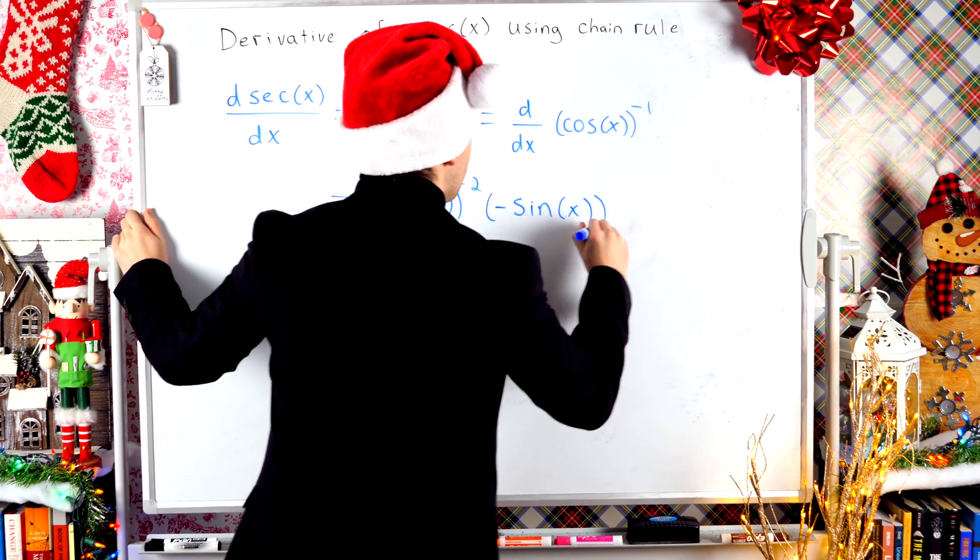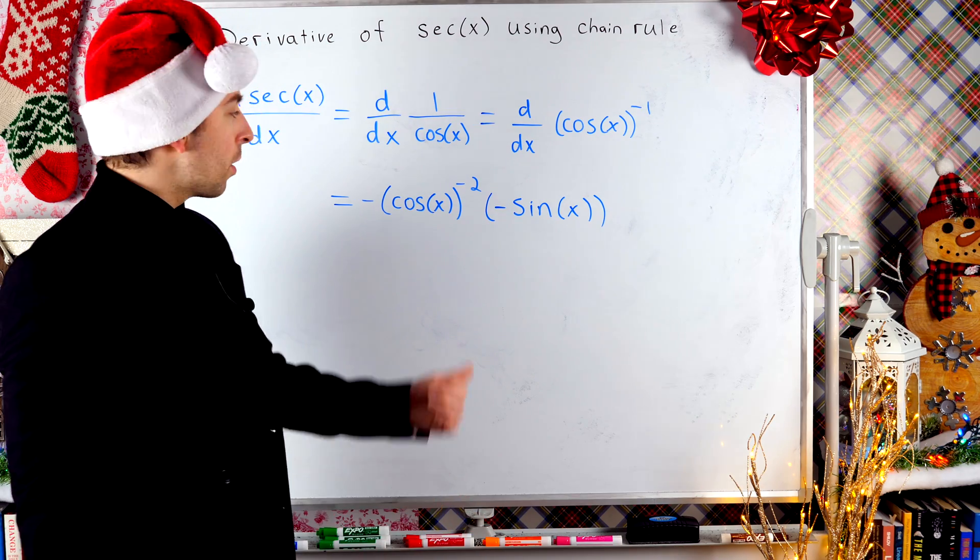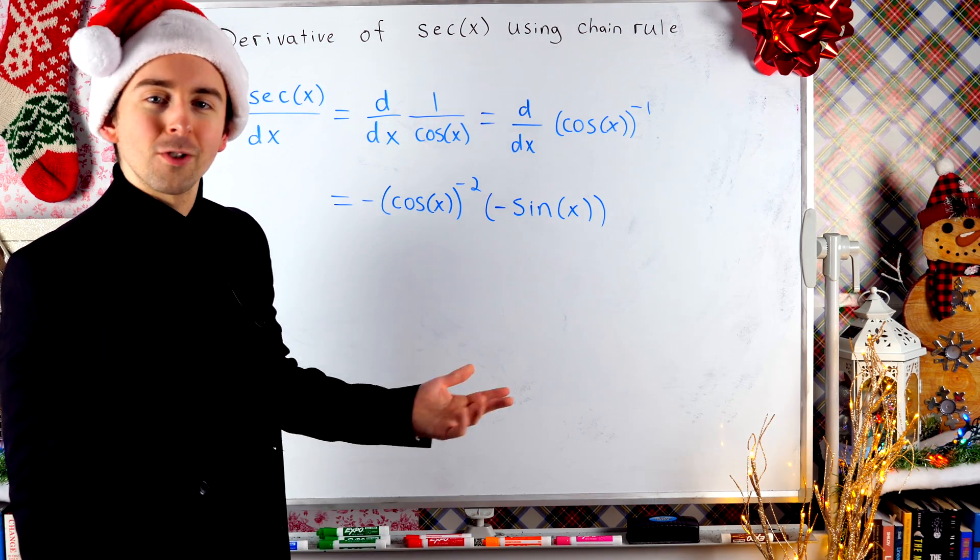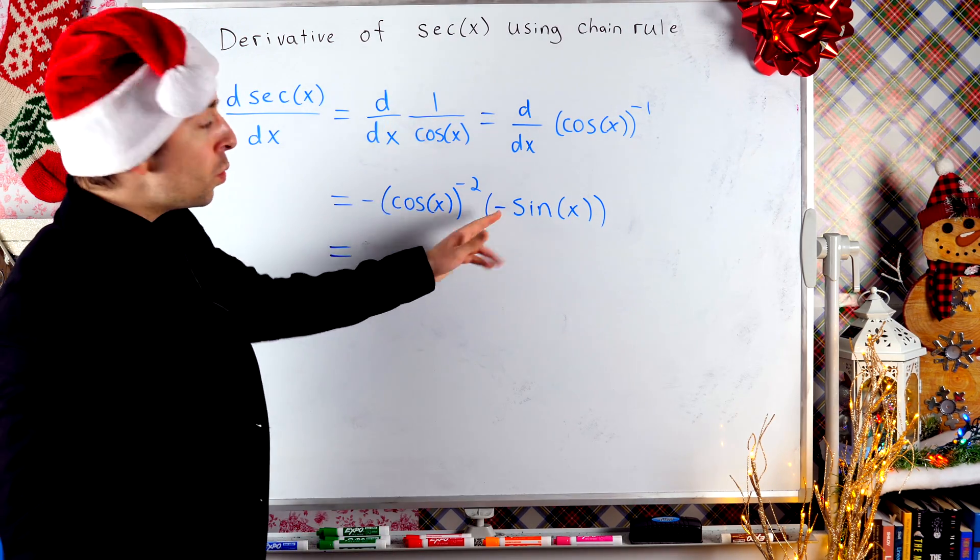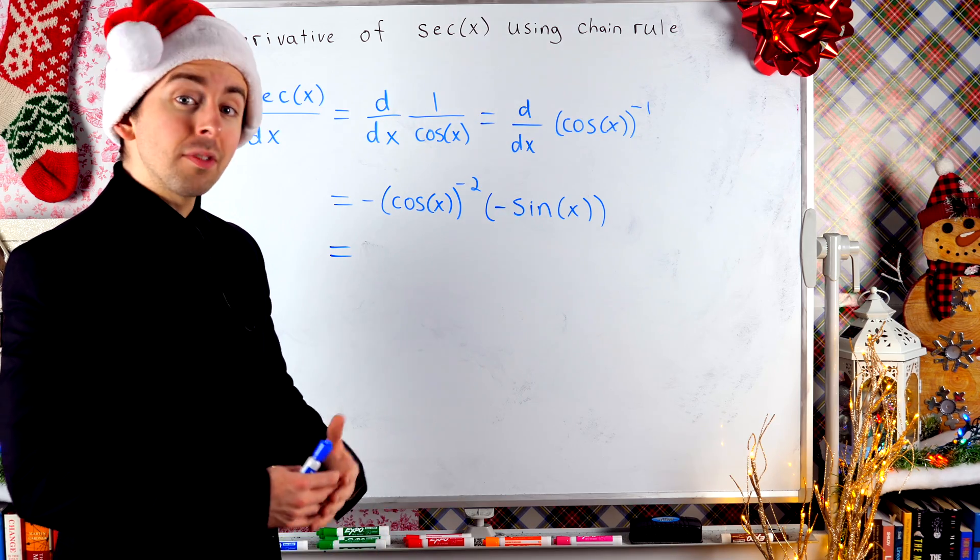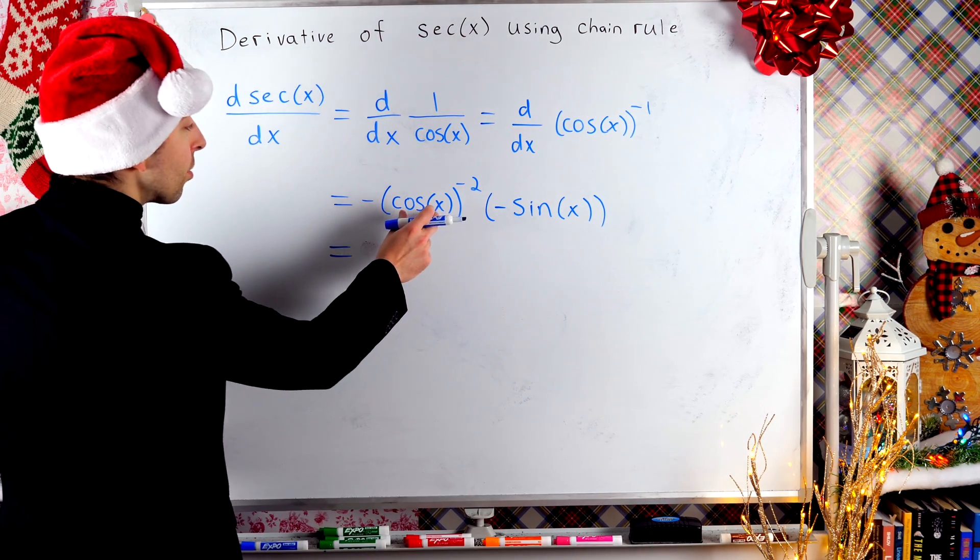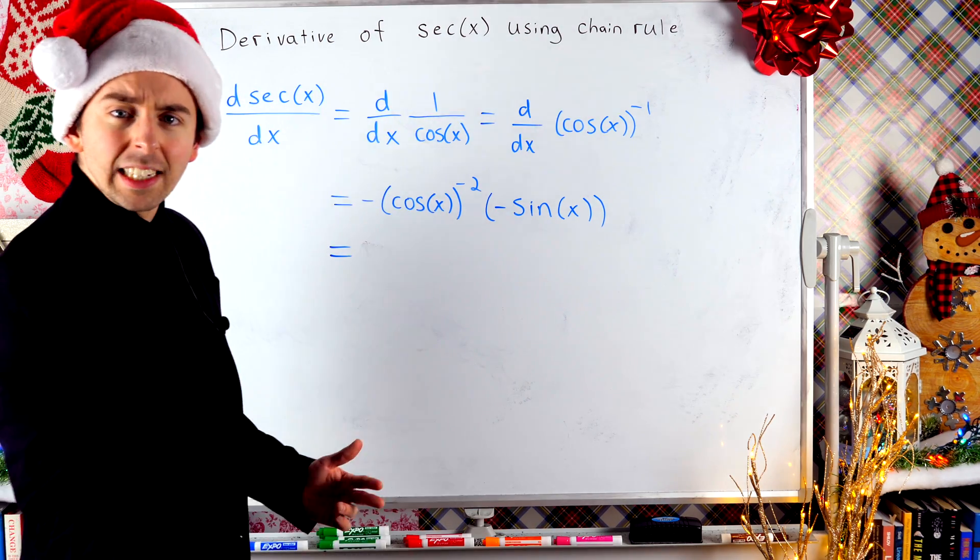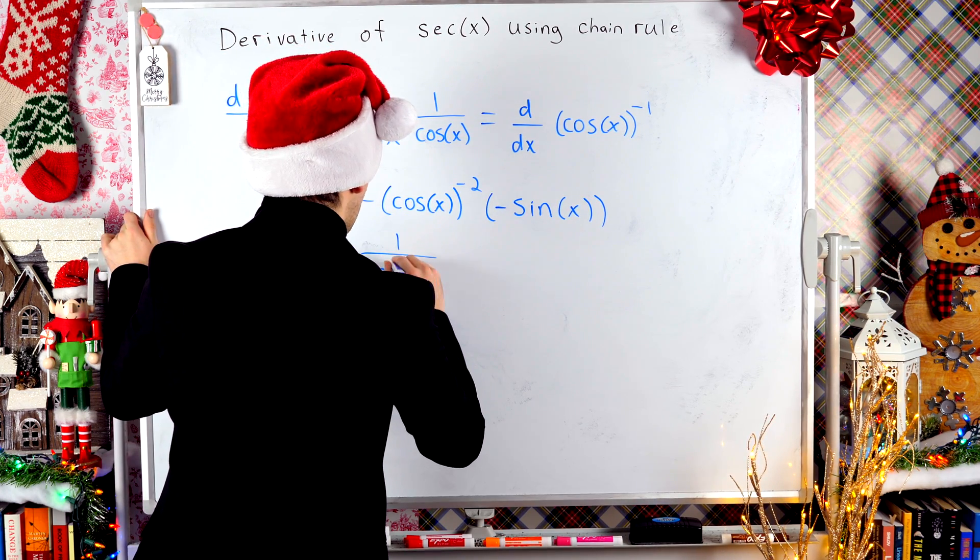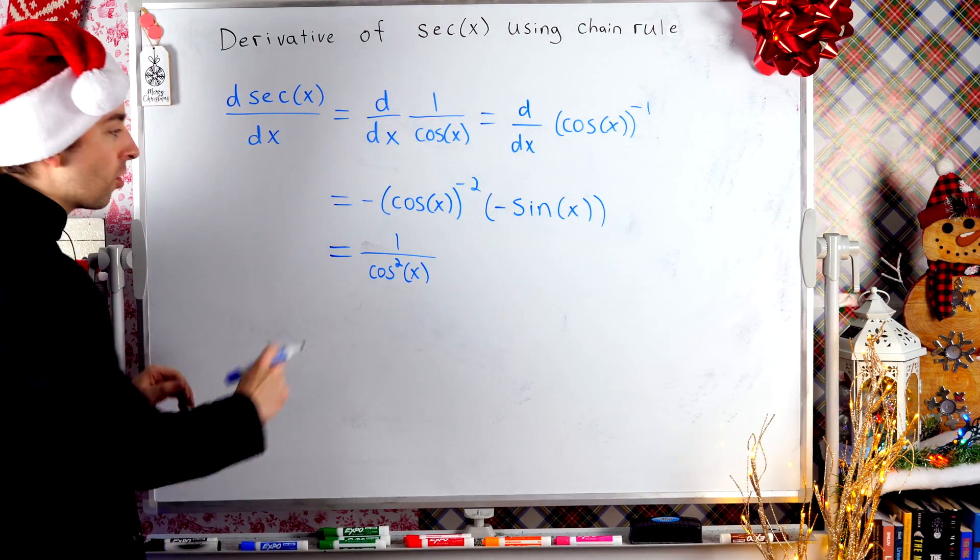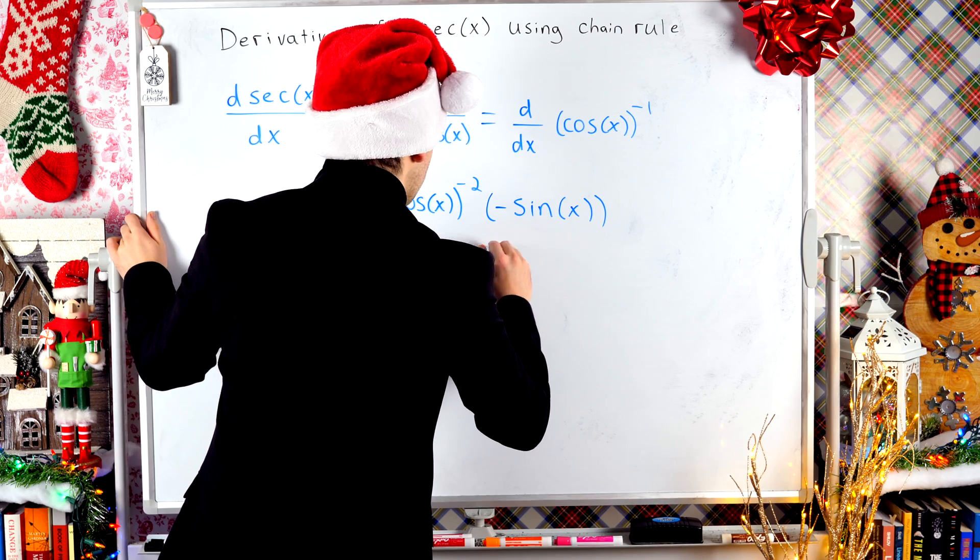All that remains is a little bit of simplification. Why don't you try and do some simplification yourself before watching me go through it? All right, let's finish it off. We've got two negative factors. So those negatives are going to cancel out. We don't have to worry about any negative signs anymore. Now what is cosine to the power of negative two? Well, that would be one over cosine squared. And I'm going to write cosine squared just like that. Of course, we still have our factor of sine x over here.